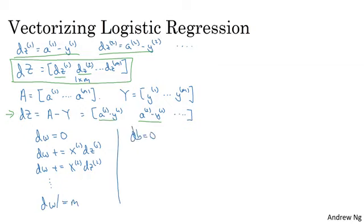db was initialized as 0, and then db plus equals dz1, db plus equals dz2, down to dzm, and then db divided equals m.